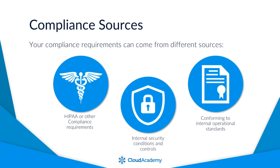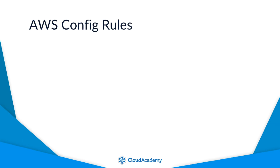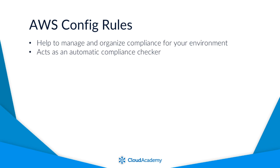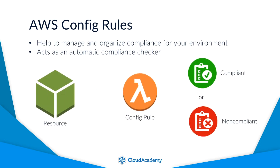This can be a huge risk from an audit perspective and also from a security stance. AWS Config allows you to utilise config rules to help you manage and organise this compliance, which acts as an automatic resource compliance checker. When a change is made to a resource, AWS Config will check to see if the resource matches a rule, with the help of a Lambda function, and if so, it will check the compliance of that resource against the rule following the changes made.